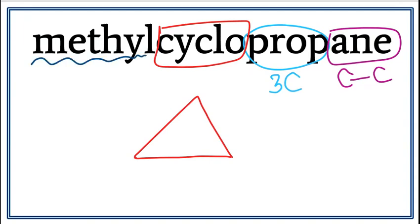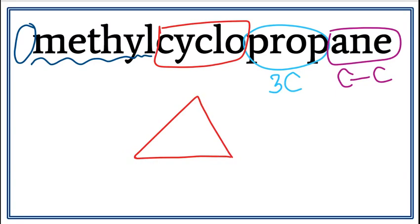There's also a methyl attached to this cyclopropane, but we don't see a number to tell us where this methyl is attached. When there is no number, we just assume that it is on the first carbon. We really don't need to number this cyclopropane because any of these carbons can be the first carbon. We can attach the methyl anywhere. So let's attach the methyl here. This is the structure for methylcyclopropane.